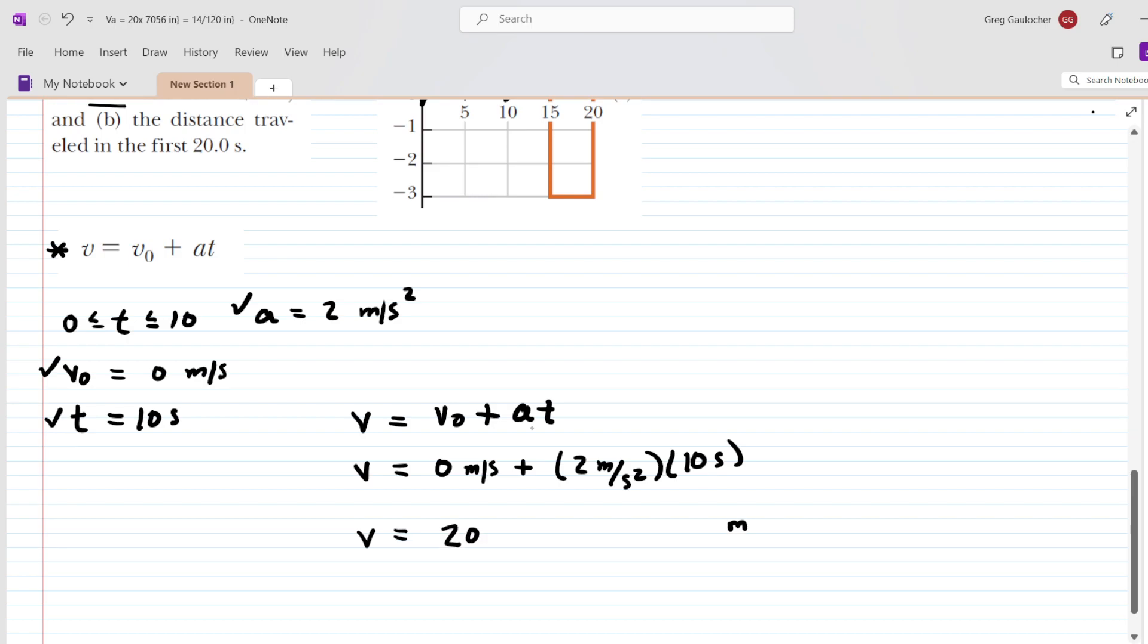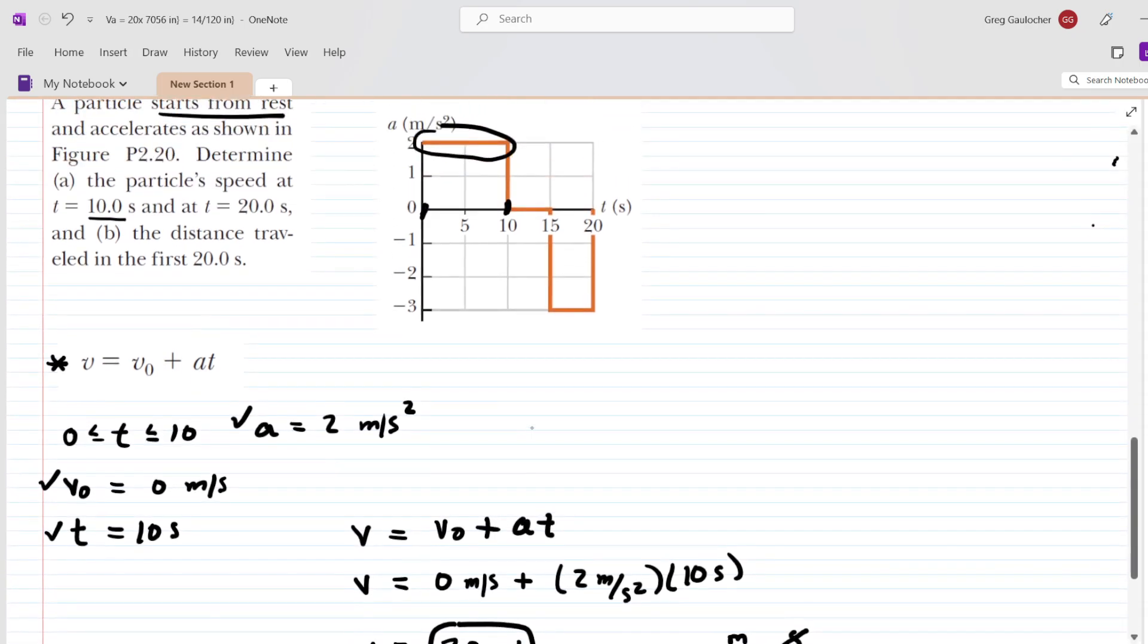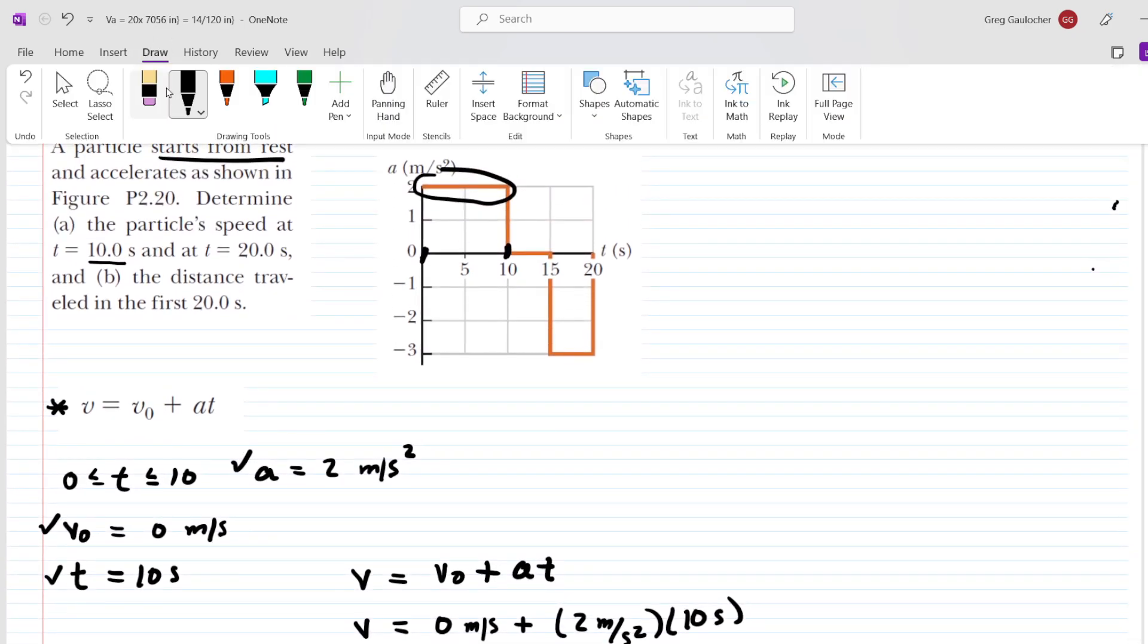When we multiply meters per second squared by seconds, then one of the seconds will cancel in the numerator along with another of the seconds in the denominator. That gives us meters per second. So this is the correct answer to the first part of this question. The particle is traveling at 20 meters per second after 10 seconds of travel.